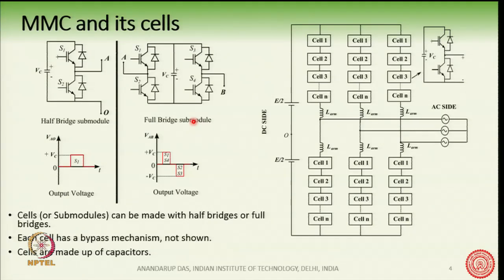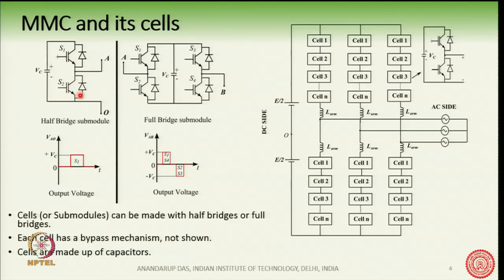The half-bridge sub-module is one possible variant of the cell structure, and the full-bridge is another. In the case of a half-bridge cell, there are two IGBTs which are complementary in nature — otherwise it would short the DC bus. The DC bus is formed by a capacitor, so there is only one capacitor and no isolated DC source connected to the DC bus of this cell.